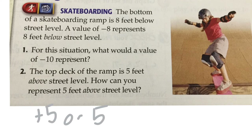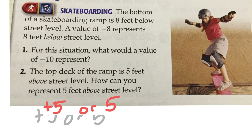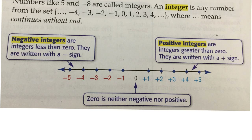The top deck of the ramp is 5 feet above street level. So how could we represent 5 feet above street level? It would be positive 5. We could either write plus 5 or just 5 with no sign at all — both mean positive 5 feet. Because we are above street level, we know that is what we are talking about. Negative integers are integers that are less than 0, always written with a negative sign. Positive integers are greater than 0, written with a positive sign.